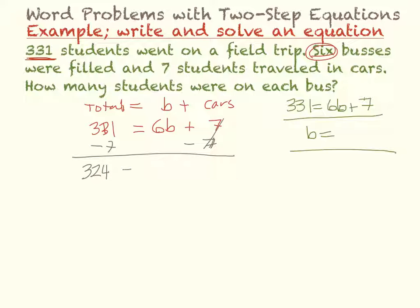324 equals six times B. Then I have to divide by six. Three hundred and twenty-four divided by six will give me fifty-four. So my final answer is fifty-four